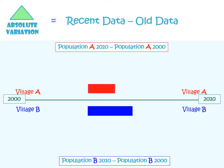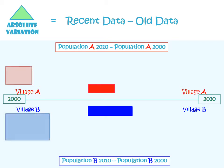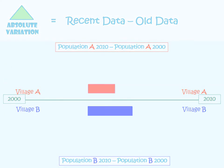In absolute terms, B has grown more. But this result does not take into account that B had more inhabitants than A in the year 2000. Let's cast our mind back to the illustration — B was larger. However, had the two villages been of the same size in the year 2000, that is, had they had the same population, would B have grown more than A?